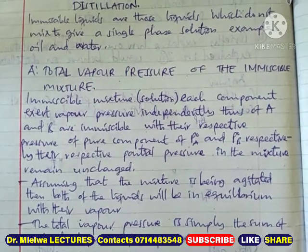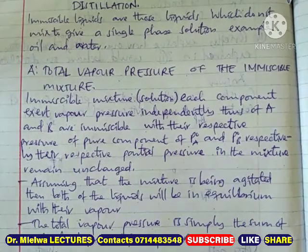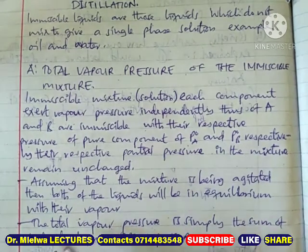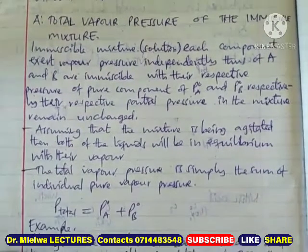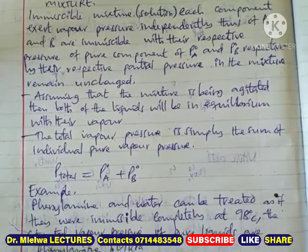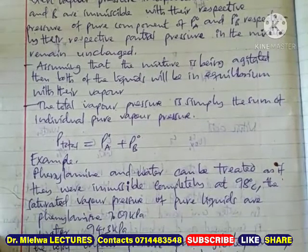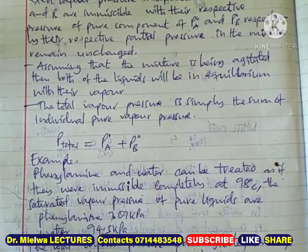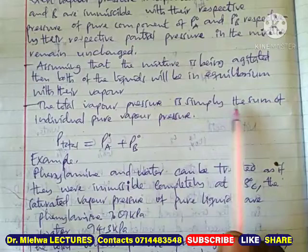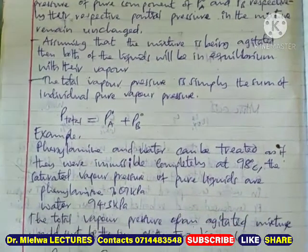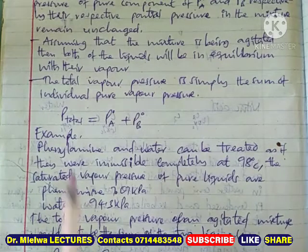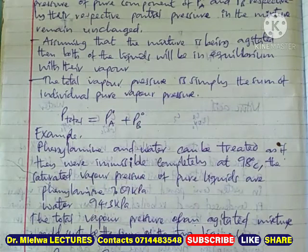Assuming that the mixture is being agitated, both liquids will be in equilibrium with the vapor. Each liquid will be in equilibrium with its own vapor. So the total vapor pressure is simply the sum of the individual pure vapor pressures. Total vapor pressure equals pressure of A plus pressure of B — that is P-naught of A plus P-naught of B.